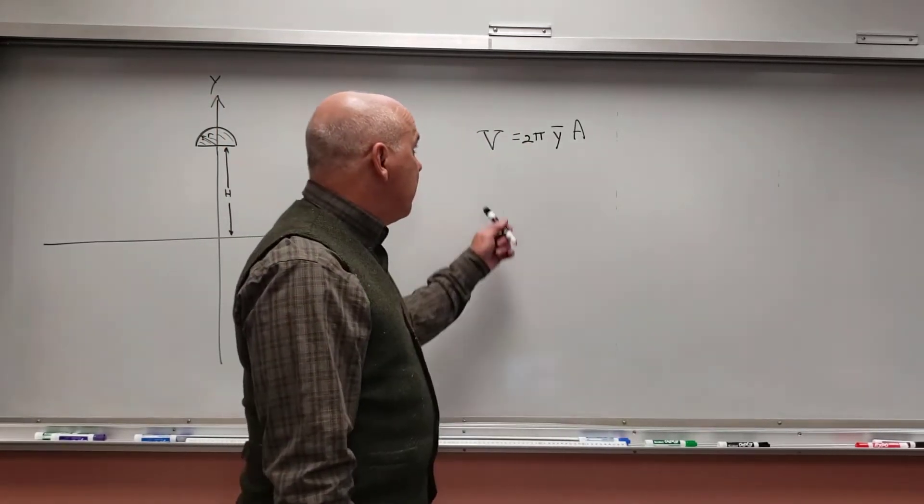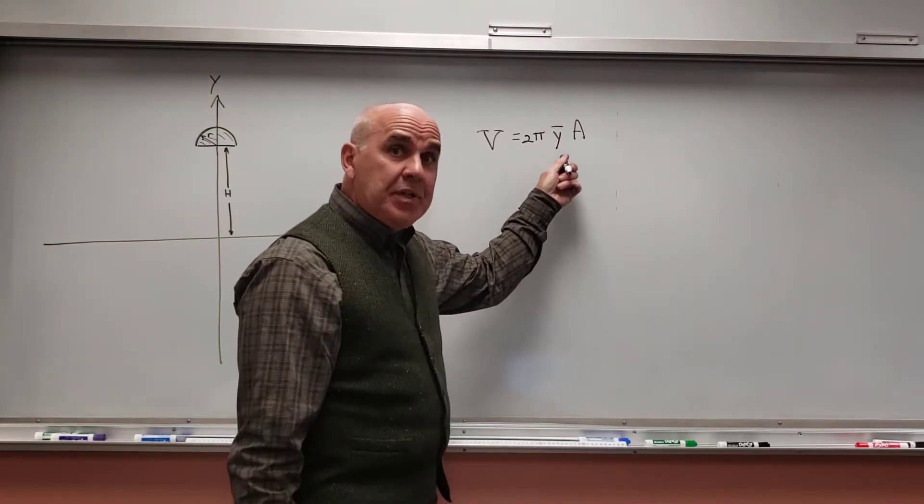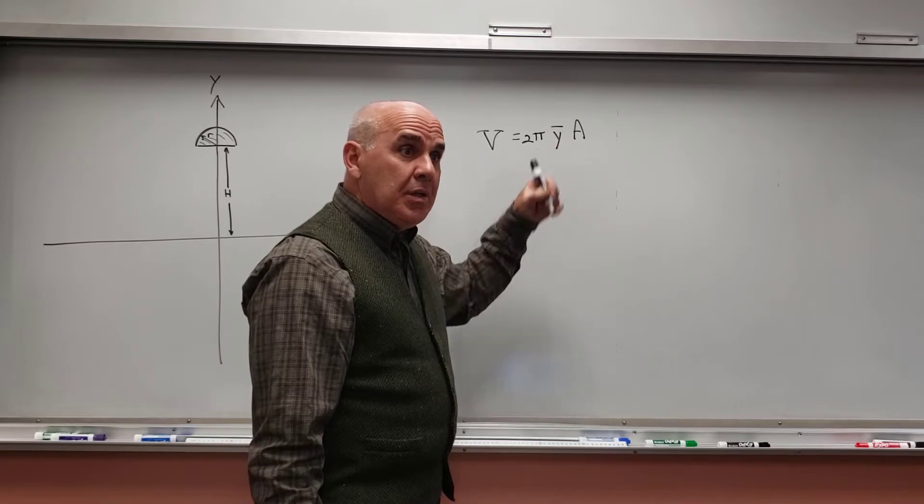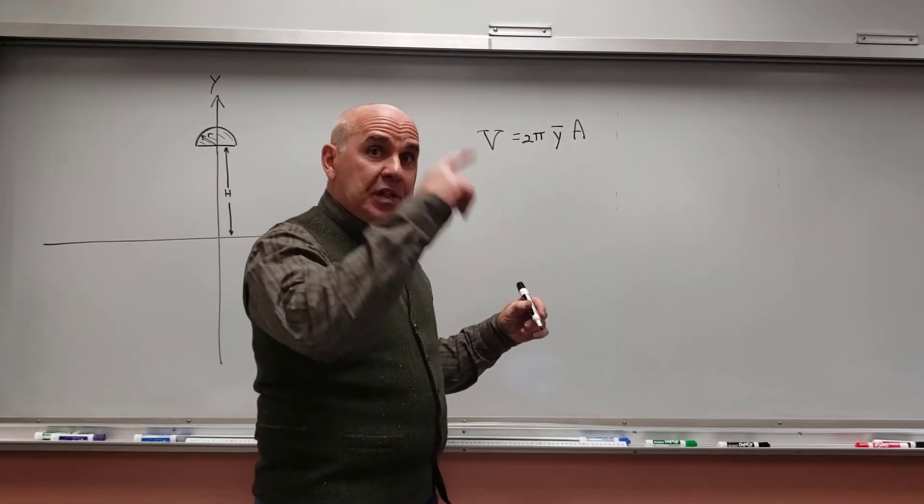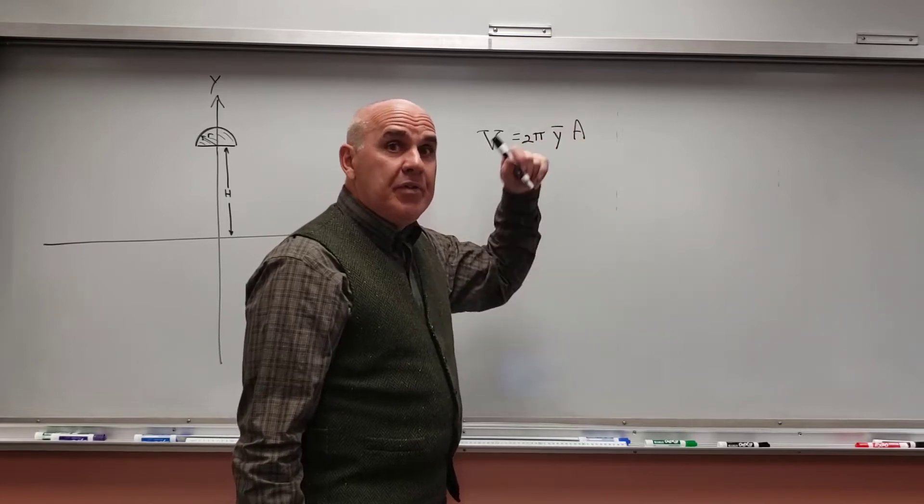The theorem says that the volume of revolution should equal 2π times the centroid of the semicircle, so whatever the y position of the centroid of the semicircle is, times the area of the semicircle.